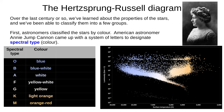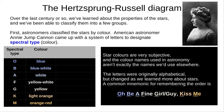Astronomers started classifying stars by colour. American astronomer Annie Jump Cannon came up with a system of letters to designate spectral type — a fancy astrophysics word for colour. Star colours are very subjective and the colour names used for stars aren't quite the same as the names we'd use elsewhere. Certainly A and G don't look white and yellow. Jump Cannon's original system was alphabetical, but as we learned more about stars some letters were reordered while others were added or dropped.